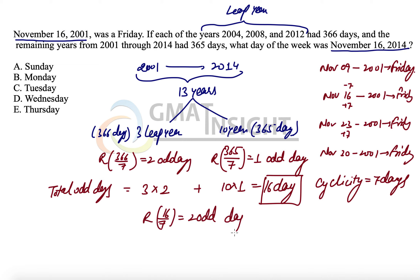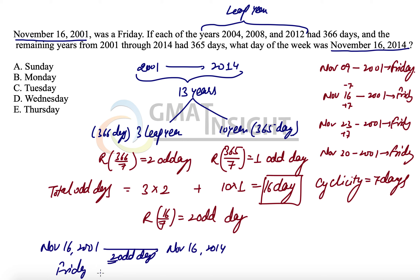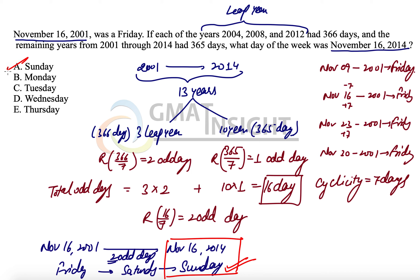We have finally two odd days when moving from November 16, 2001 to November 16, 2014. Two odd days means: starting from Friday, one day ahead is Saturday, and the second day ahead is Sunday. So on November 16, 2014, the day will be Sunday, which is option A. Therefore, option A is our correct answer. Thank you so much.